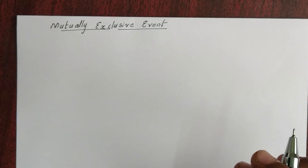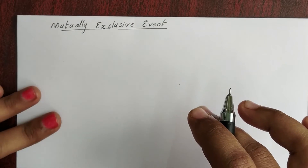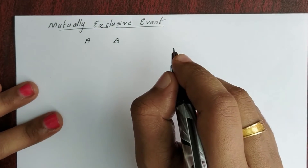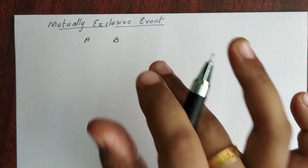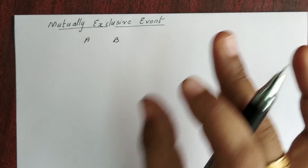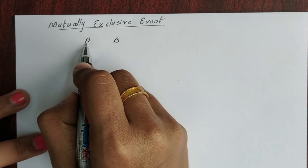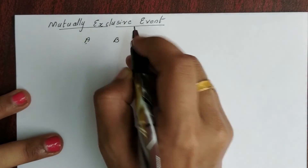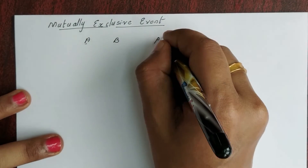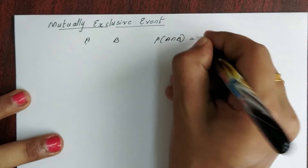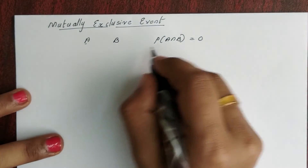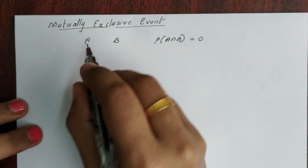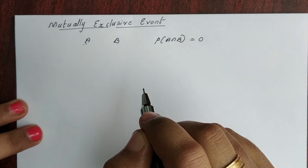The next definition is Mutually Exclusive Events. Mutually exclusive events involve two events A and B. The outcome of an experiment is a result. In mutually exclusive events, the probability of A intersection B is equal to 0. That is mutually exclusive — if two events cannot occur at the same time, we call them mutually exclusive events.